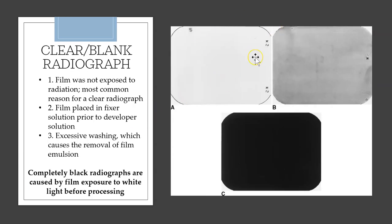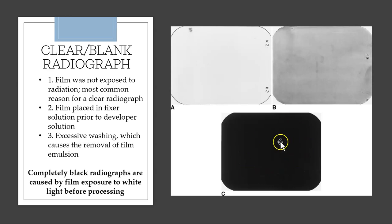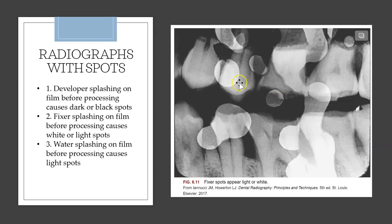A clear radiograph happens when the film was not exposed to radiation — for example, if you didn't push the x-ray button or the film wasn't in the mouth during exposure. A completely black radiograph occurs when the film was accidentally exposed to light and then processed. Radiographs with light dots are caused by fixer spots — fixer solution that splashed on the film before processing.